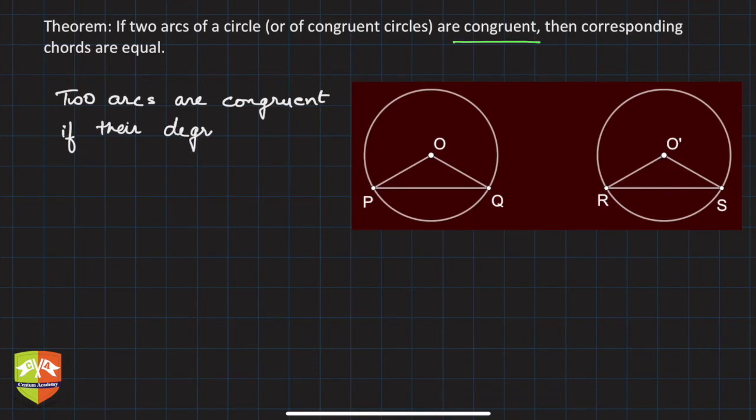What is meant by degree measures? For example, if PQ and RS both have the same radius r, then PQ is congruent to RS if angle POQ is equal to angle RO'S.